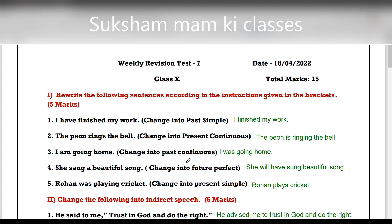'I am going home' — change into past continuous. Use 'was' and add -ing: 'I was going home.' 'She sang a beautiful song' — change into future perfect. Use 'will have' plus past participle: 'She will have sung a beautiful song.' Last one: 'Rohan was playing cricket' — change into present simple. Use the first form of the verb with 's' since the subject is singular: 'Rohan plays cricket.'